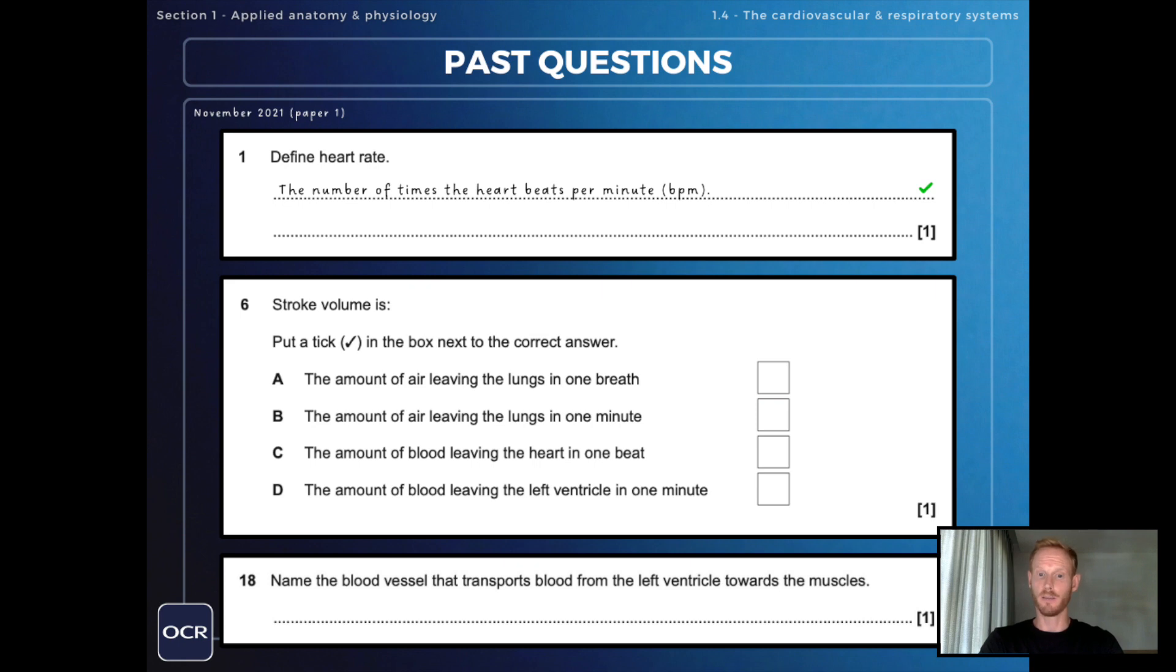Next, stroke volume is: the amount of air leaving the lungs in one breath, the amount of air leaving the lungs in one minute, the amount of blood leaving the heart in one beat, or the amount of blood leaving the left ventricle in one minute? Well, the first two relate to the respiratory system which will be the focal point of our next video, and option D is the definition of cardiac output.